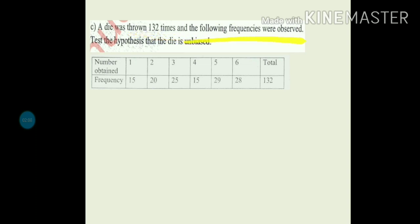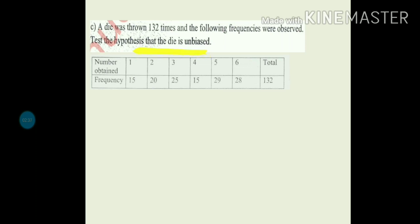Let us consider some problems. A die was thrown 132 times and the following frequencies were observed. Test the hypothesis that the die is unbiased. Numbers obtained and how many times those numbers appeared — their frequencies — are given. Total should be 132. We are throwing a single die 132 times. You are getting number 1 fifteen times; similarly 2 is getting 20 times, and we are obtaining 6, 28 times.